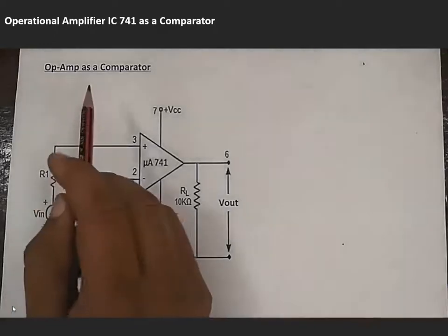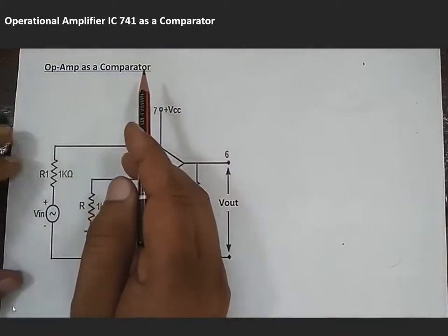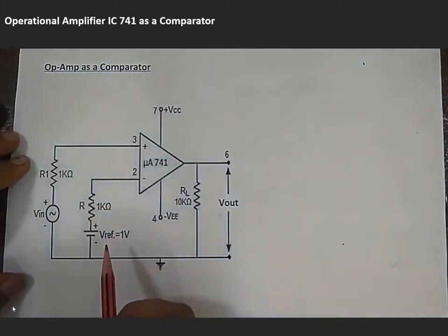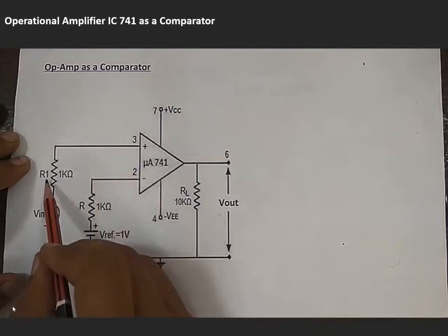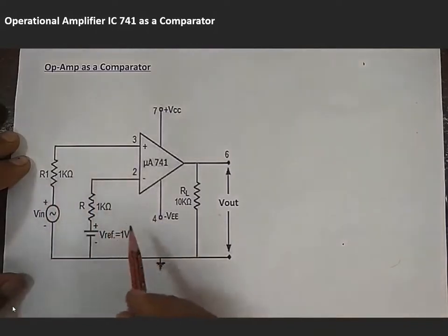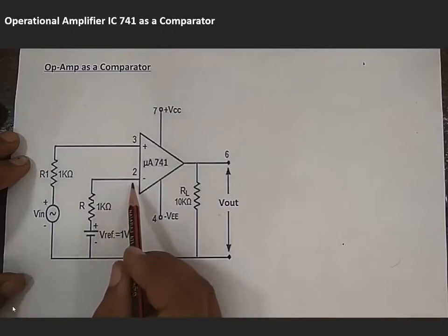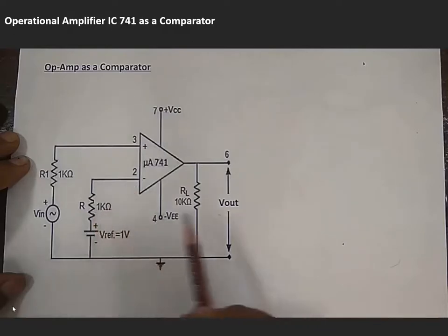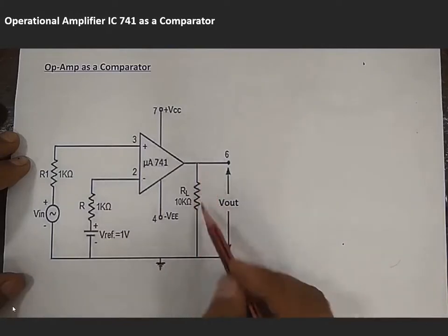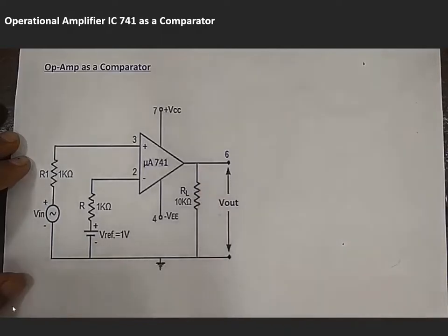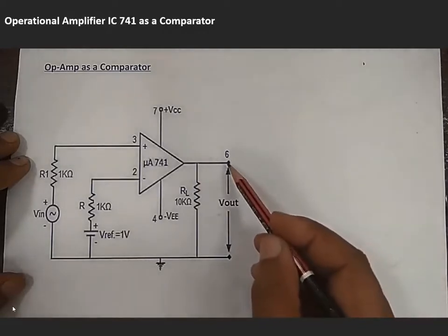Today we will perform op-amp as a comparator circuit. This is a circuit diagram of op-amp as comparator. In this circuit, input signal VIN is applied to pin number 3 through a resistor R1, and a reference voltage V-reference is applied to pin number 2 through R. A load resistor RL is connected across the output with respect to ground. The output of this comparator is observed at pin number 6 of this IC.